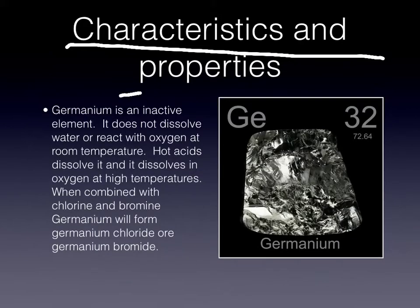Characteristics and properties. Germanium is an inactive element. It does not dissolve in water or react with oxygen at room temperature. Hot acids dissolve it and it dissolves in oxygen at high temperatures. When combined with chlorine and bromine, Germanium will form Germanium chloride or Germanium bromide.